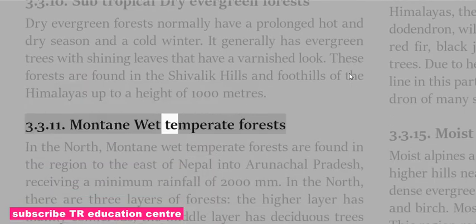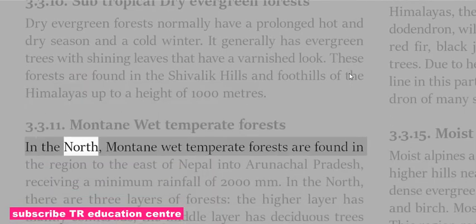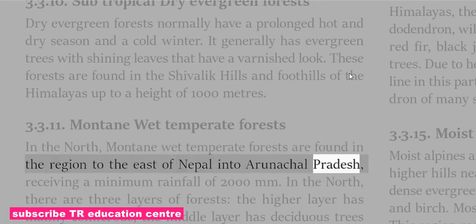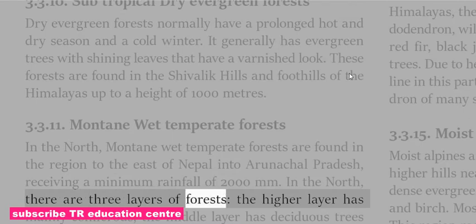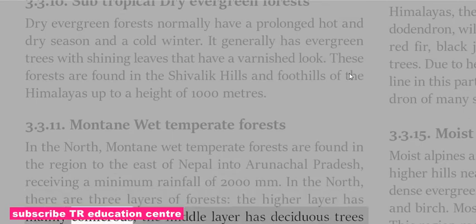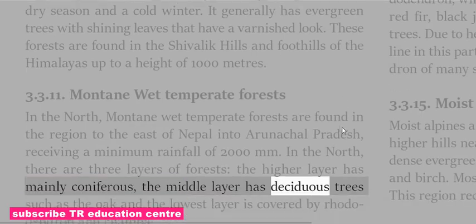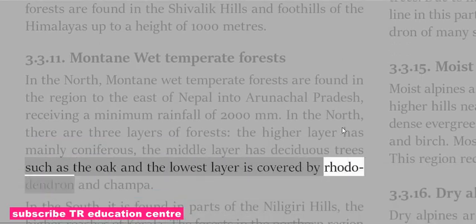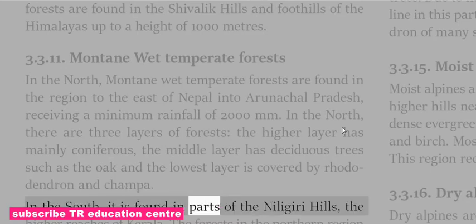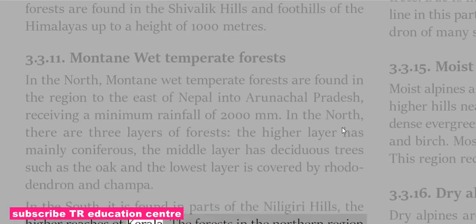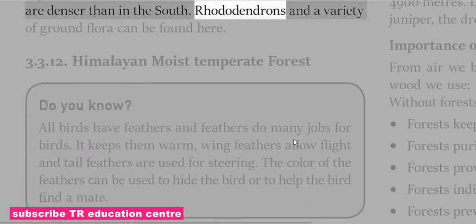Subtropical Dry Evergreen Forests normally have a prolonged hot and dry season and a cold winter, and generally have evergreen trees with shining leaves that have a varnished look. These forests are found in the Shivalik Hills and foothills of the Himalayas up to a height of 1,000 meters. Mountain Wet Temperate Forests in the north are found in the region east of Nepal into Arunachal Pradesh, receiving a minimum rainfall of 2,000 mm. There are three layers of forests: the higher layer has mainly coniferous trees, the middle layer has deciduous trees such as oak, and the lowest layer is covered by rhododendron and champa.